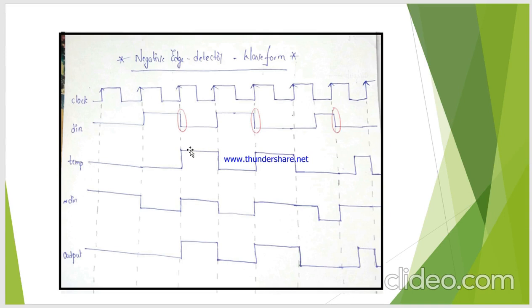I have taken the inverse of the input signal, and that is represented as the negation of D. Now I need to perform the logical AND operation between the TMP signal and the output from the NOT gate. It will detect the negative edges. Whenever it detects the negative edge, the output will become high for one clock cycle.